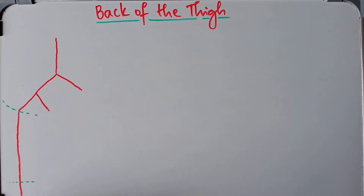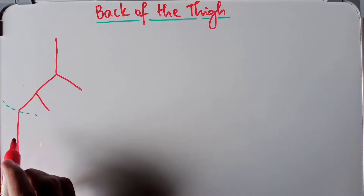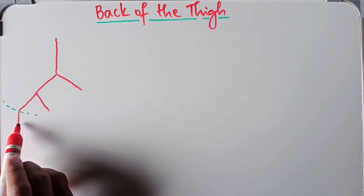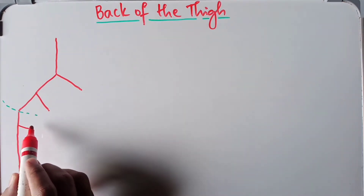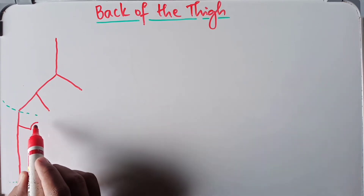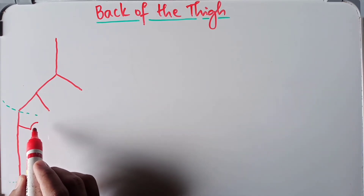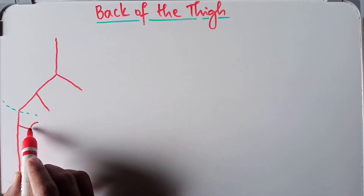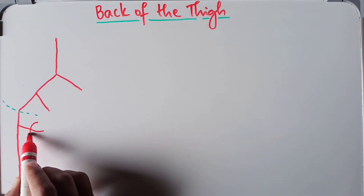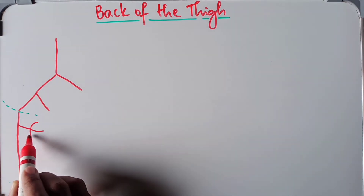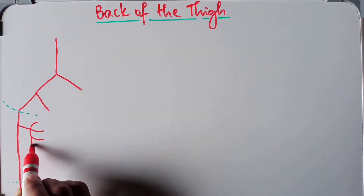From the femoral artery we have a large branch known as the profunda femoris artery. From this profunda femoris artery we have the lateral circumflex femoral artery as well as the medial circumflex femoral artery. As it continues, it will give four branches known as the perforating arteries.